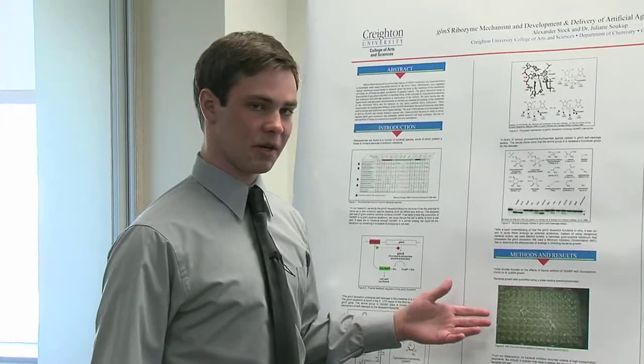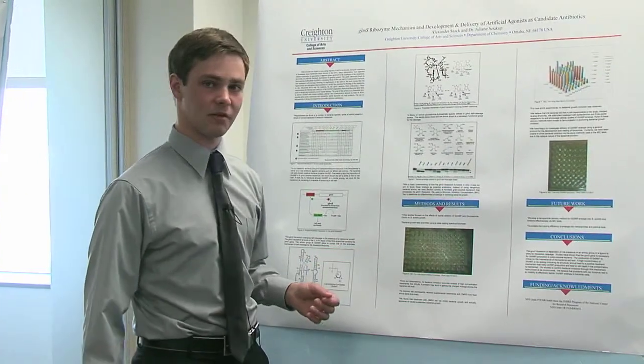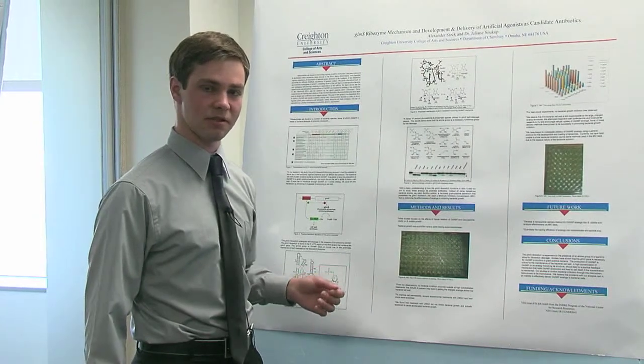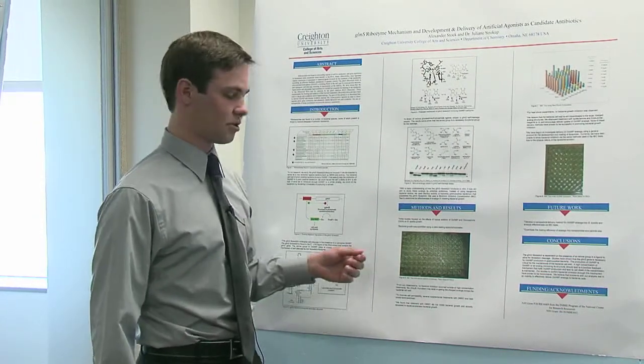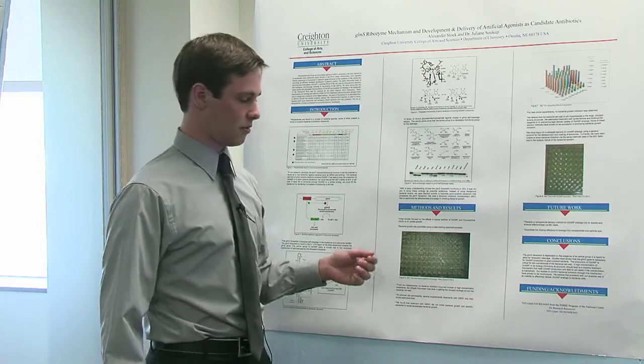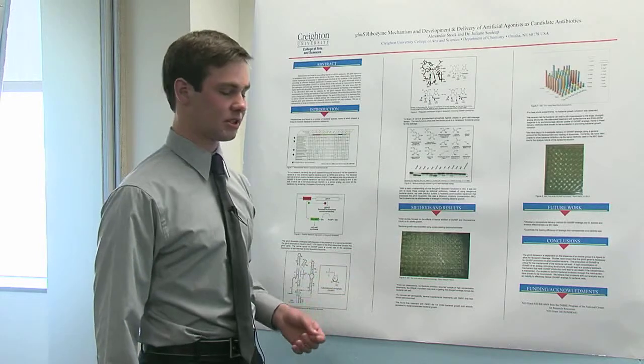So this is called a minimum inhibitory concentration test. What we do is we measure bacterial growth by measuring the absorbance of light that goes through these plates. If the culture is turbid, then we note a high absorbance and high bacterial growth. If the solution is cleared, there's no bacterial growth, and essentially our antibiotic was working.